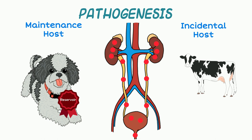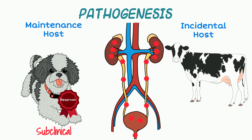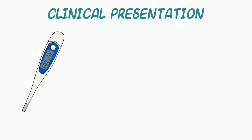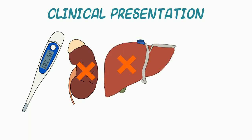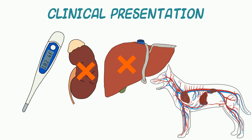In maintenance hosts, infections are generally subclinical. However, in incidental hosts, lepto presents most often as an acute febrile illness characterized by damage to the kidney and/or liver. Other body systems may be affected, resulting in uveitis, pancreatitis, bleeding, hemolytic anemia, muscle pain, or respiratory disease.